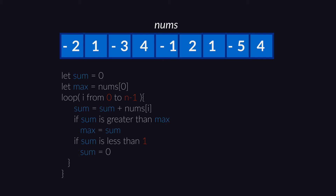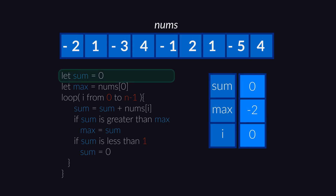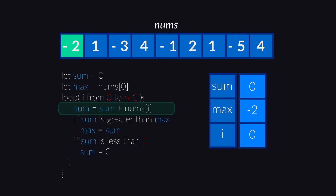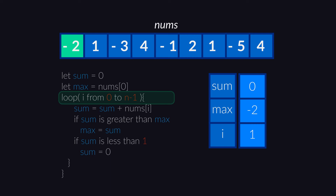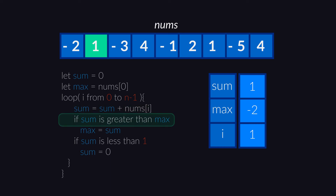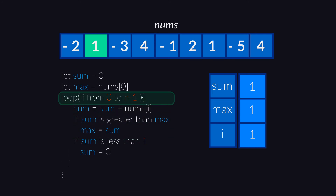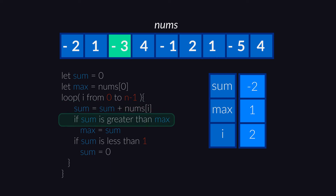Let's do a run-through of this pseudocode before we jump to the code. At first sum equals 0, max equals minus 2, and i equals 0 in the first iteration. Sum equals sum plus the first element of the array, that is minus 2. Minus 2 is not greater than minus 2, so we jump to the other condition. Minus 2 is less than 1, so we reset sum to 0. Now we move to the second iteration of i — i becomes 1. Sum equals 1, because the previous value of sum was 0. Now 1 is greater than minus 2, so we change the value of max to 1. 1 is not less than 1, so we jump to the next iteration where i equals 2. Sum equals 1 plus minus 3, which is minus 2. Minus 2 is not greater than 1. Minus 2 is less than 1, so sum equals 0.